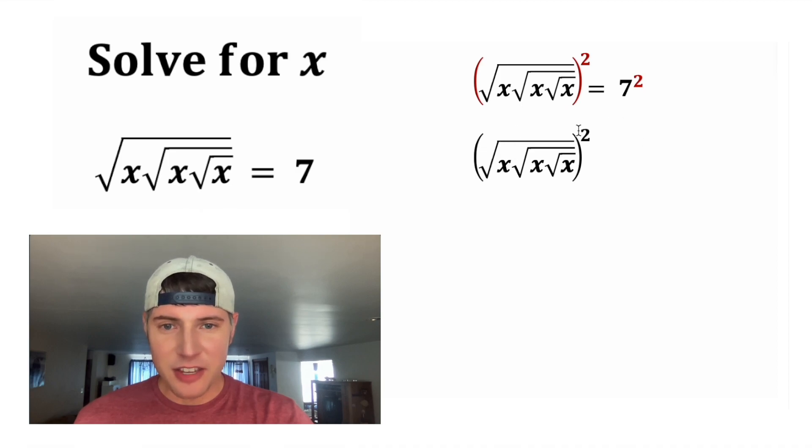On the left hand side, this square and the square root are going to cancel each other out. And on the right hand side, let's just leave it as 7 squared.